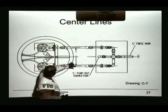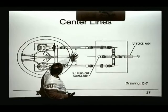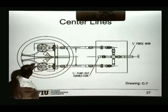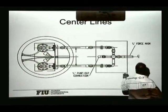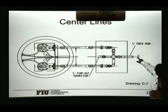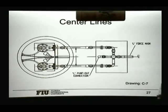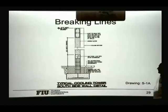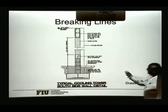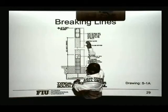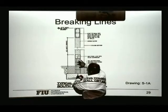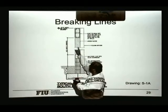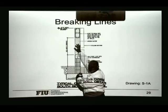Here is an example of a dimensional line — you have a dimension associated with the distance between two points. Here is an example of a center line; normally the center line will have 'CL' in that line so you know it's a centerline for something. Here is an example of break lines — this is when you have a large object where the architect wants to show both the bottom and the top, and the things in between are the same, so they do a break line and show those two portions.